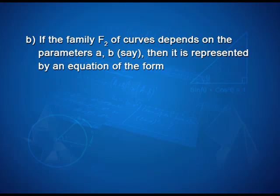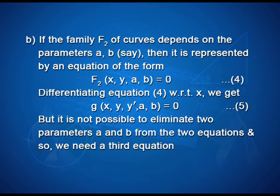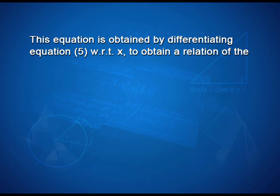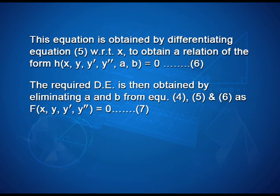In the second case, if the family F2 of curves depends on two parameters a and b, it is represented by F2(x, y, a, b) = 0. Differentiating gives g(x, y, y′, a, b) = 0. But it is not possible to eliminate two parameters from two equations, so we need a third equation. This is obtained by differentiating again to get h(x, y, y′, y″, a, b) = 0. The required differential equation is obtained by eliminating a and b from all three equations, giving f(x, y, y′, y″) = 0.